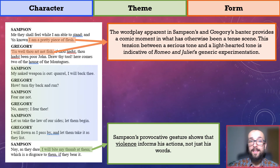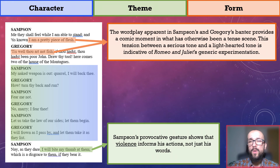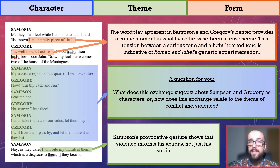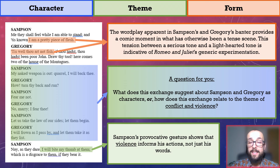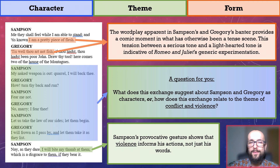Jumping back for a moment, this exchange between Samson and Gregory is something you ought to make a note on. I'd like to ask: what does this exchange suggest about them as characters, or how does it relate to the theme of conflict and violence? This could be something you think about and make your own annotation for, developing your notes even further. I'd really love to see your response in the comments section too — if you feel brave enough to share your answer in full sentences, I'll give it a read and respond, and I'll even pin the best answer.